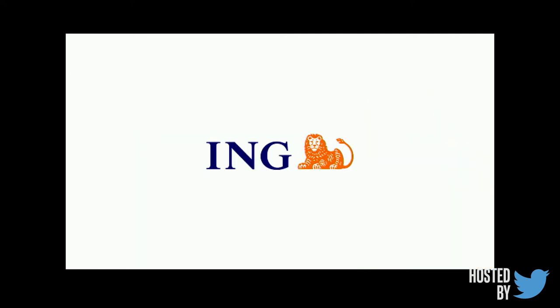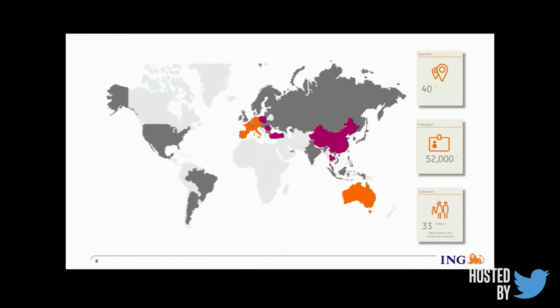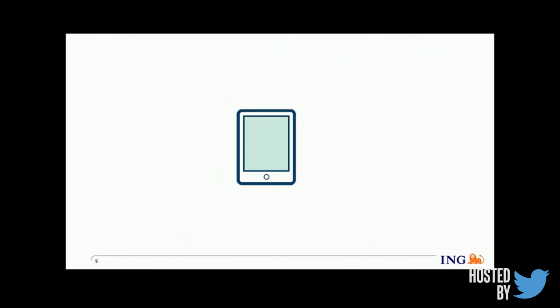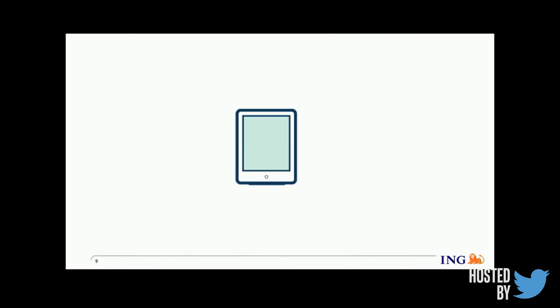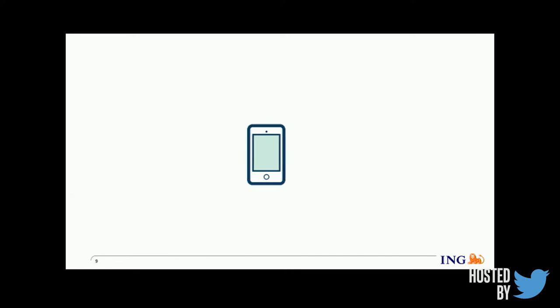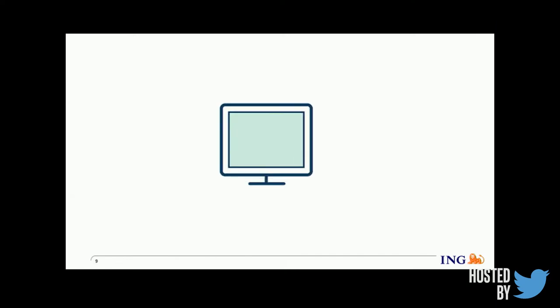I work in a global organization called ING. It's a financial organization based in Amsterdam, operating in 40 different countries, serving around 36 million customers worldwide. We are collecting huge amounts of data from different data sources and analyzing it to detect actionable insights for our customers, mitigate security risks, and detect fraudulent transactions.